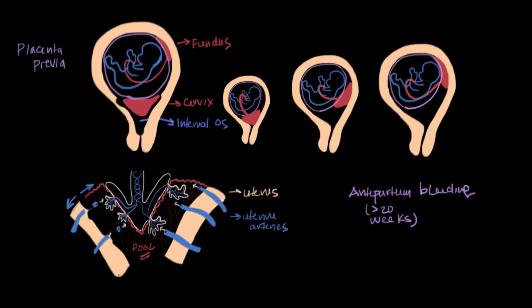And there's a really important way to tell them apart. Placental abruption tends to present with painful bleeding, whereas placenta previa tends to present with bleeding that's not so painful, so painless vaginal bleeding. So if a woman presents with painless antepartum bleeding, painless vaginal bleeding after 20 weeks into her pregnancy, she's suspected of having placenta previa.